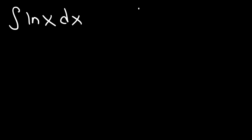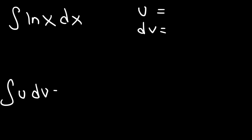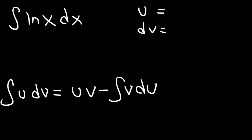Now we need to determine what we're going to make u and dv equal to. The formula is the integral of u dv is equal to u times v minus the integral of v du. So there are two parts here: we have dx and ln(x). To find the integral of ln(x) is what we're trying to do, so it makes no sense to set dv equal to ln(x). Instead, we need to make u equal to ln(x), and dv has to be equal to dx.